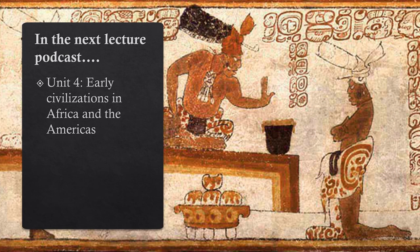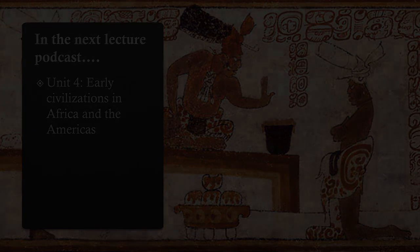That's it for today. In our next lecture podcast, we'll be beginning a new module: The Age of Empires and Religious Civilizations, from 600 BCE to 1300 CE. In our first unit of Module 2, we'll be looking at early civilizations in Africa and the Americas. In Africa, we'll see the rise of kingdoms, farming communities, and cities in both the Sahara, Nile Valley, and Ethiopian highlands. In the Americas, we'll look at how civilization develops further with the rise of the Maya kingdoms and civilizations in the Andes. Until next time, on Intersections of World History.